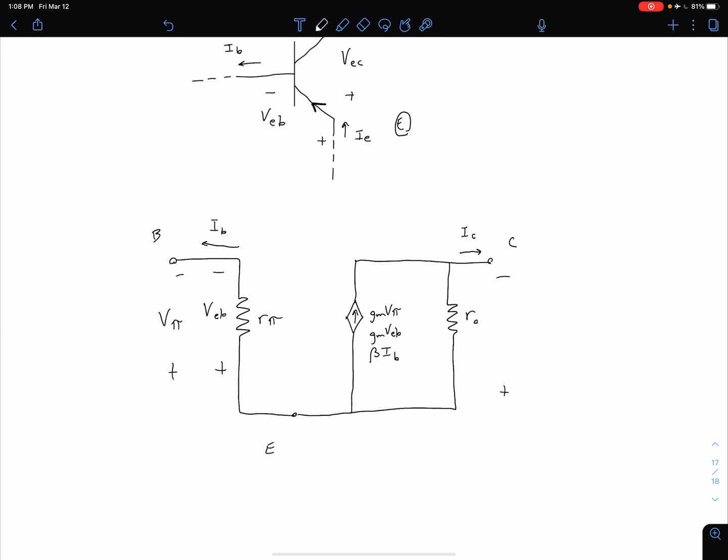We've got positive at the emitter, negative at the collector, voltage VEC. So again, overall, relatively similar to what we see for our NPN case, we've just switched some polarities and some current directions.